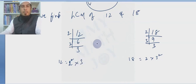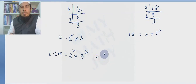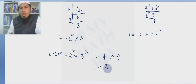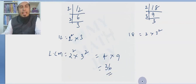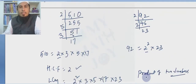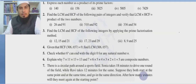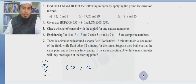Prime factorization: 12 equals 2 squared times 3, and 18 equals 2 times 3 squared. LCM takes all prime numbers with highest powers: 2 squared and 3 squared. So LCM equals 4 times 9 equals 36. After 36 minutes, they will meet again at the starting point. We have now completed all the exercise problems. I hope you understood — this was a straightforward exercise. Thank you very much.